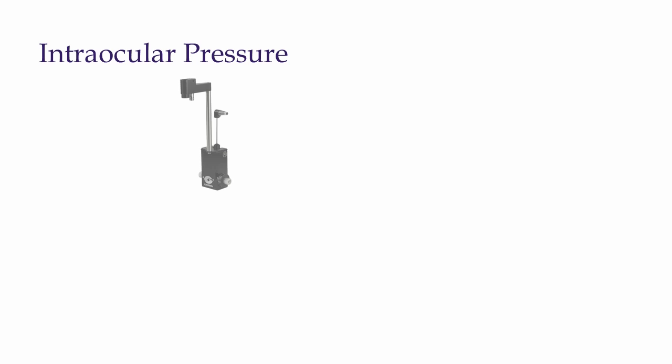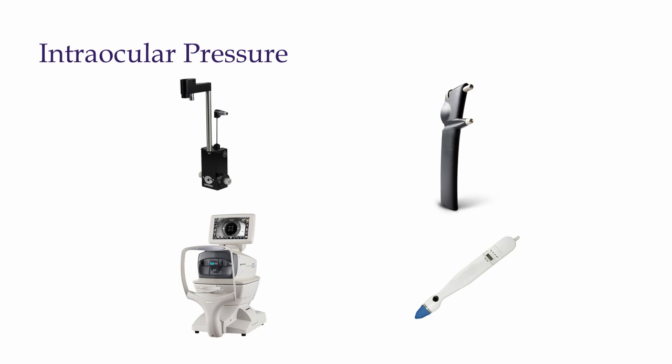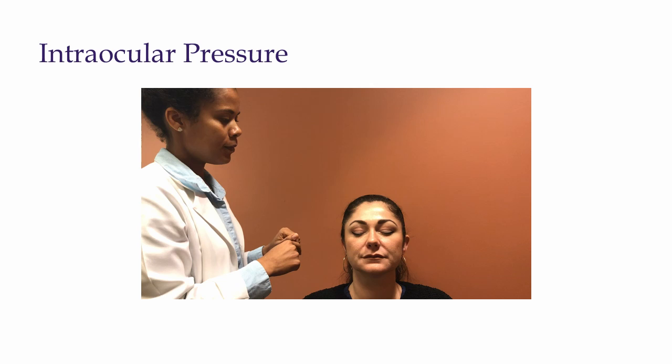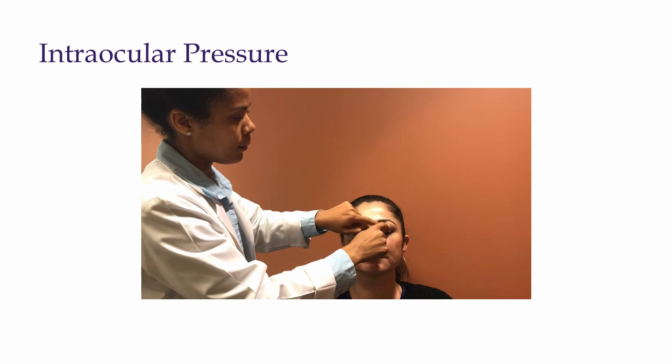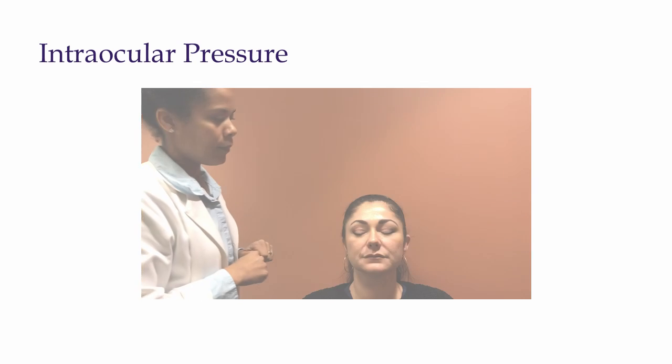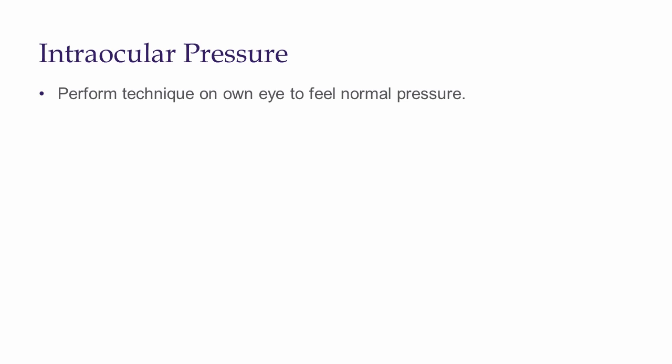Next, we will assess intraocular pressure. Ophthalmologists have several devices available to accurately measure intraocular pressure, but in the office setting, finger palpation can be used to estimate a patient's intraocular pressure. To do this, have the patient close their eyes and look down toward their toes. Use both index fingers to gently palpate the globe one side at a time and compare the eyes. To get an idea of what a normal intraocular pressure feels like, you may perform this technique on your own eyes. Beware that if you suspect a patient has a ruptured globe, do not attempt to assess intraocular pressure as this may cause further damage to the eye.